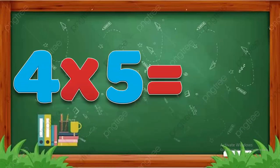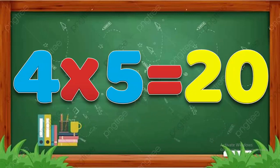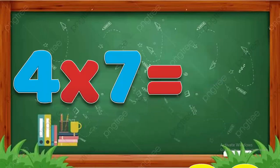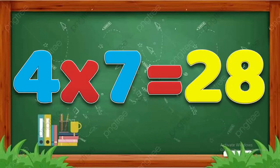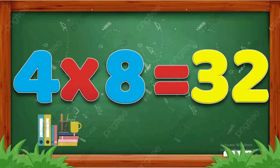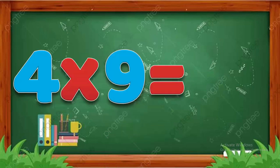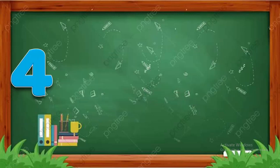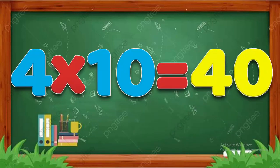Four fives are twenty. Four sixes are twenty-four. Four sevens are twenty-eight. Four eights are thirty-two. Four nines are thirty-six. Four tens are forty.